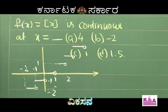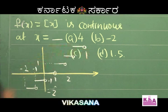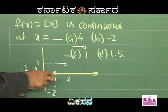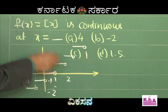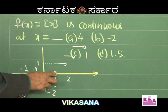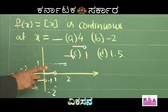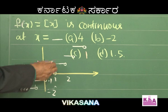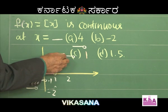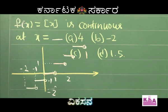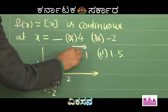Now let us check continuity at x equals 1. For values slightly less than 1, the integral part of x is 0. For values slightly greater than 1, the integral part of x is 1. Since the left and right limits differ, the function is discontinuous at x equals 1 — and in fact at any integer value. So options A, B, and C are ruled out.